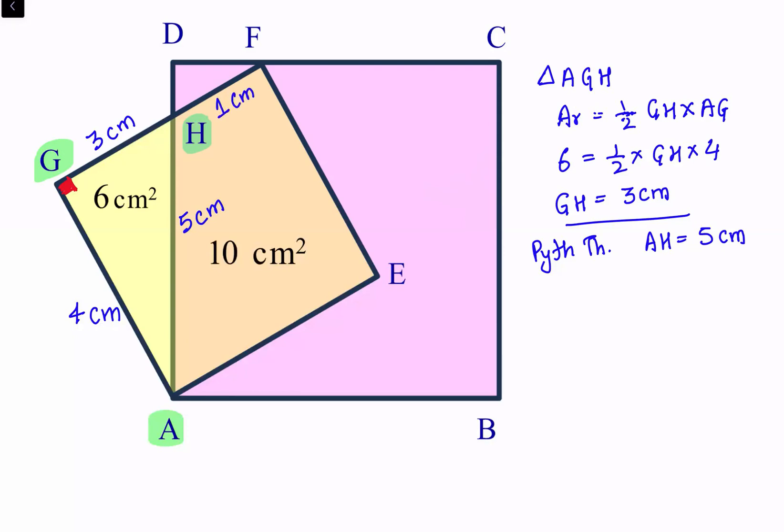Now if you look at these two triangles, triangle number 1 and triangle number 2, we can say these angles are equal because they are vertically opposite angles, and this angle is 90 degrees.